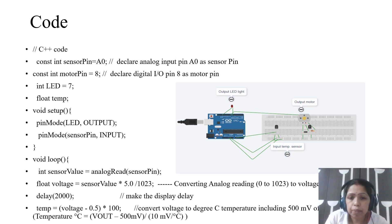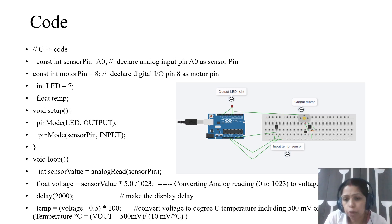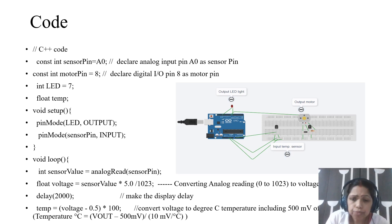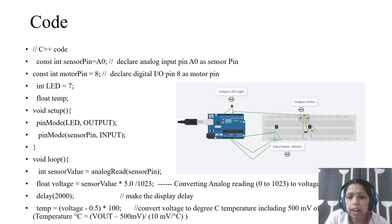The temperature data is continuously collected from the temperature sensor in analog form. Temperature data is mainly in analog form. So we are collecting analog data but sending digital data through the LED and the output motor.